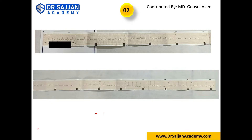P wave morphology is not so clear, but it looks normal. PR interval: we don't have a rhythm strip so we cannot comment on PR interval. ST segment: drawing a line along the baseline — looks normal in most leads. However, in AVL there is slight widening, and in AVF there appears to be slight ST elevation.